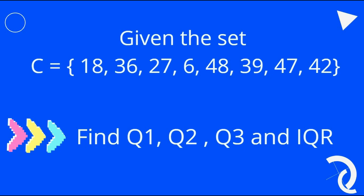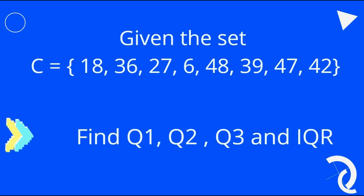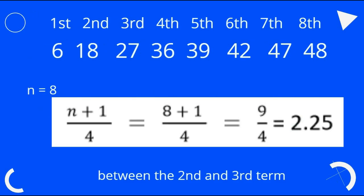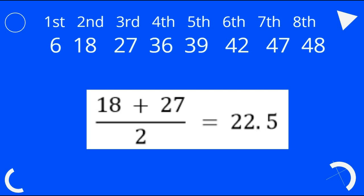Given the set C = {18, 36, 27, 6, 48, 39, 47, 42}, let us find the first, second, and third quartile and the interquartile range. We list the data in increasing order and label each position. Then we compute (n + 1) / 4. Since we have 8 observations, n = 8, so that is (8 + 1) / 4 = 9 / 4 = 2.25. This means the location of the first quartile is between the second and third term.